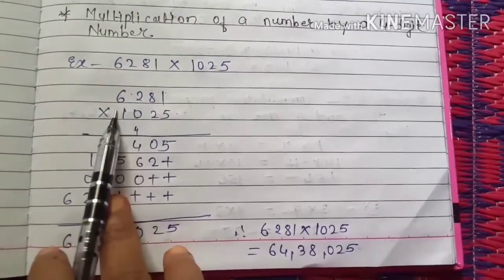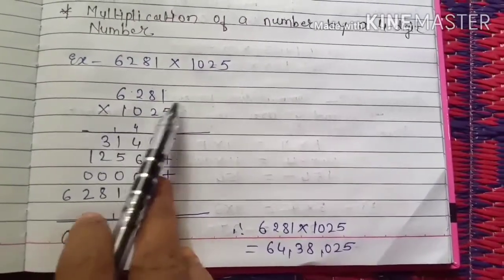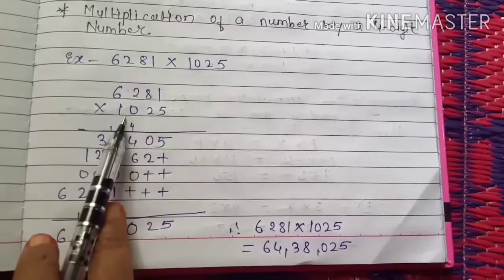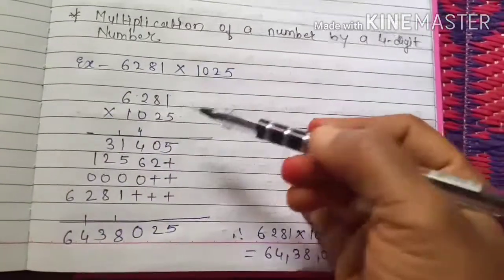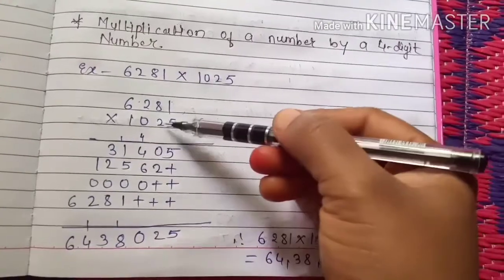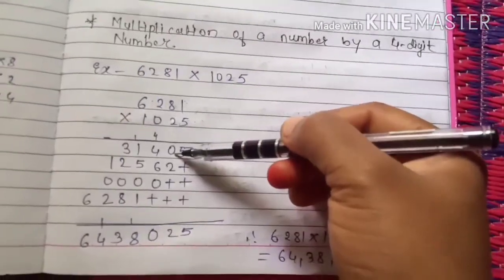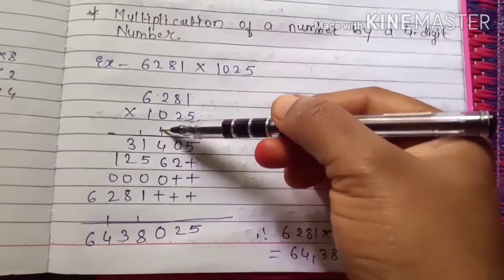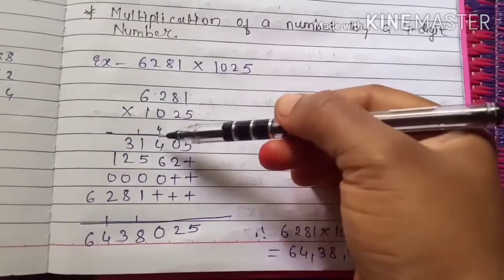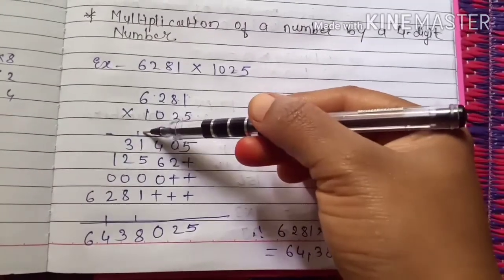The first number is 6281, it is called as a multiplicand, and 1025 is called as a multiplier. Start multiplication from the ones place. 5 ones are 5, 5 eights are 40, zero will come downside, four will go as a carry. Then 5 twos are 10, 10 plus 4 is 14, one will go as carry. 5 six are 30, 30 plus 1 is 31.